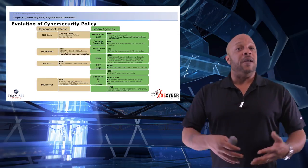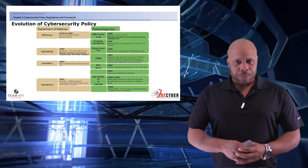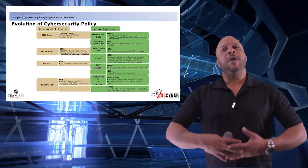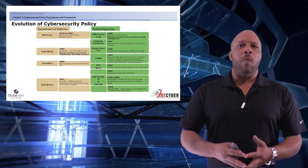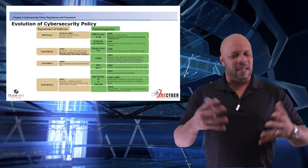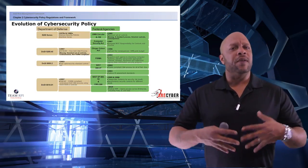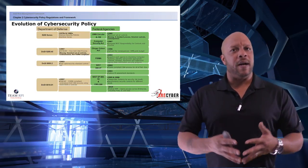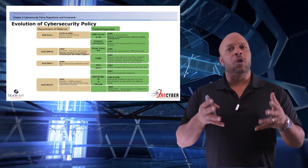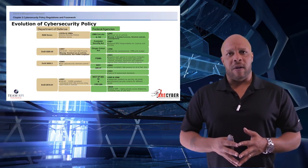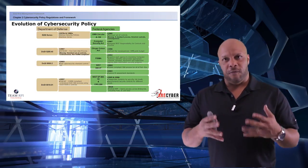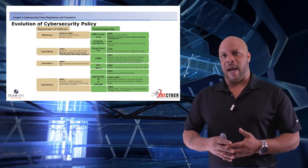On the federal side, we dealt with the OMB Circular A-130. As time progressed, the DoD's cybersecurity initiatives became more complex and needed more direction. Approximately around 1996 or 1997, we have the introduction of the Clinger-Cohen Act. Remember, anything that ends with 'act' means it's a law — that means it came out of Congress.